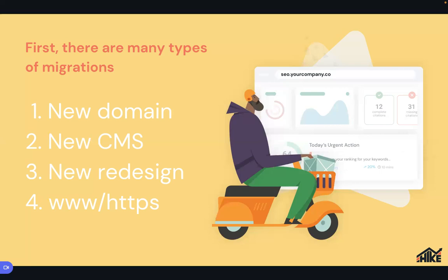A fourth type people don't often think about is www and HTTPS. Moving from www to non-www is a form of migration. Similarly, moving from HTTP to HTTPS is a form of migration as well.